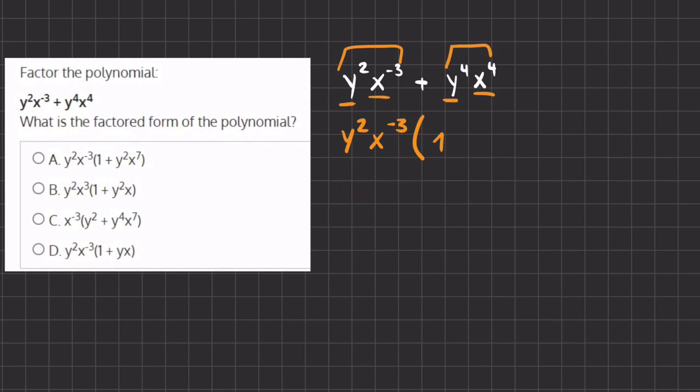If we have here y to the power of 2, because we are taking out a 2, and we multiply it by y to the power of something that we don't know, let's call it a, it should equal y to the power of 4. So that means this acts as if we are taking y to the power of 2 plus a equals y to the power of 4.